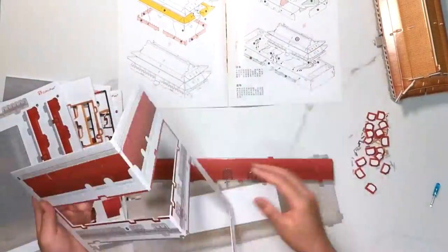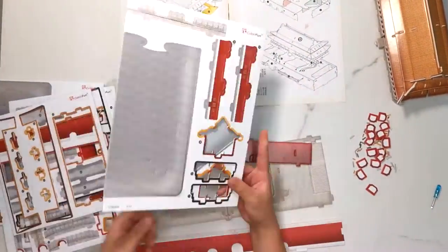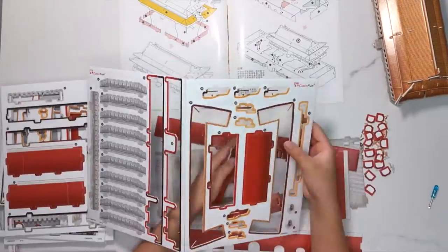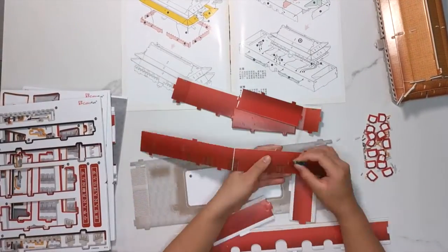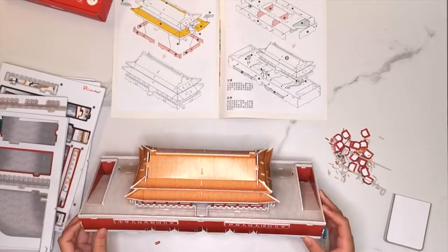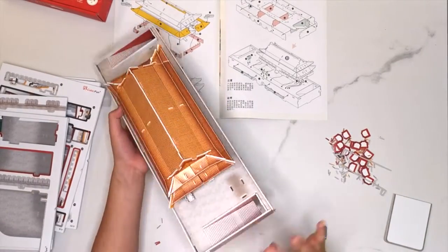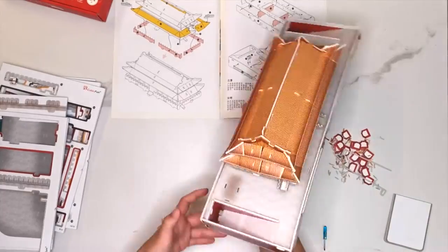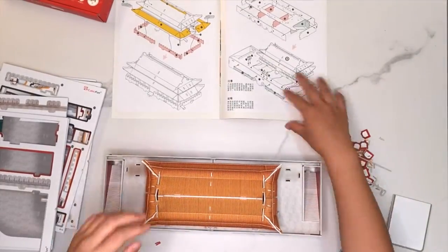In front of Tiananmen, there are five white marble bridges on top of the Golden Water River, facing each of the five city entrances of Tiananmen. The bridge in the center is the widest, designed only for the emperors, and carved in dragon patterns on the bolsters of the railings.